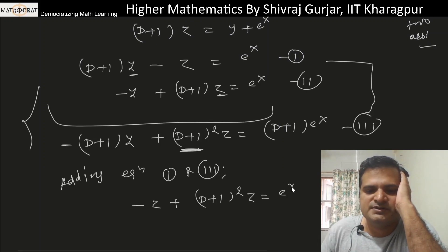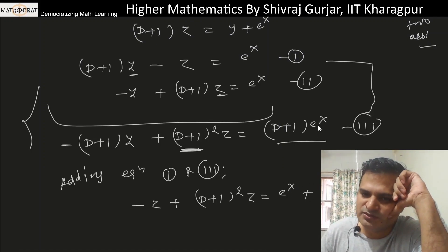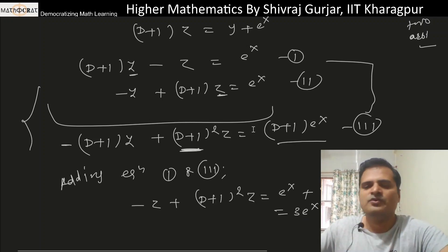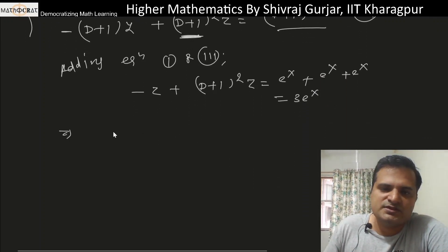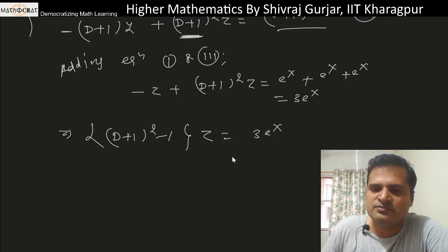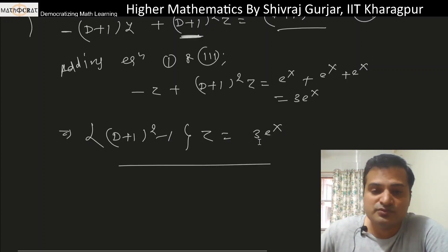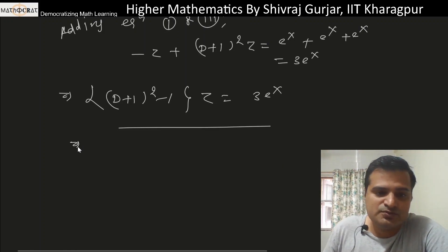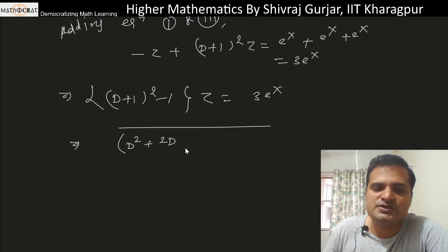When (D+1) is applied, differentiation of e^x is e^x, plus one times e^x is e^x, so this is 3e^x total. This will be [(D+1)² - 1]z = 3e^x. Expanding, (D+1)² is D² + 2D + 1, minus 1 cancels, so D² + 2D or D(D+2)z = 3e^x.